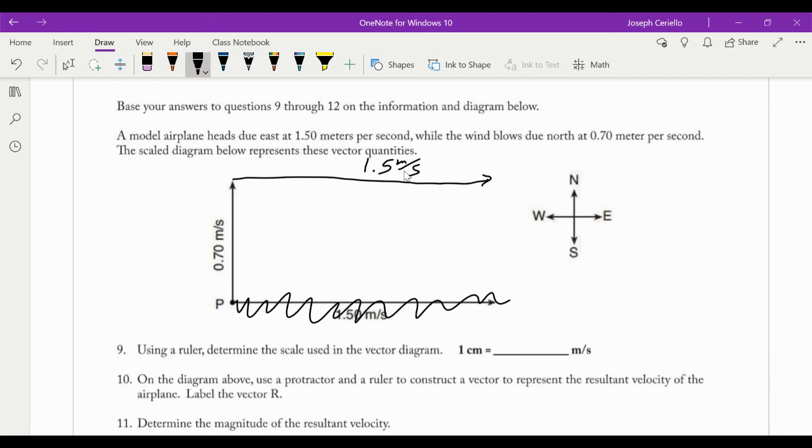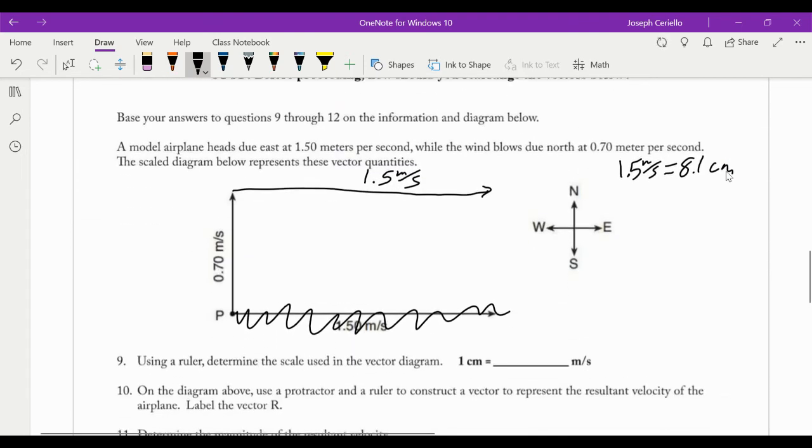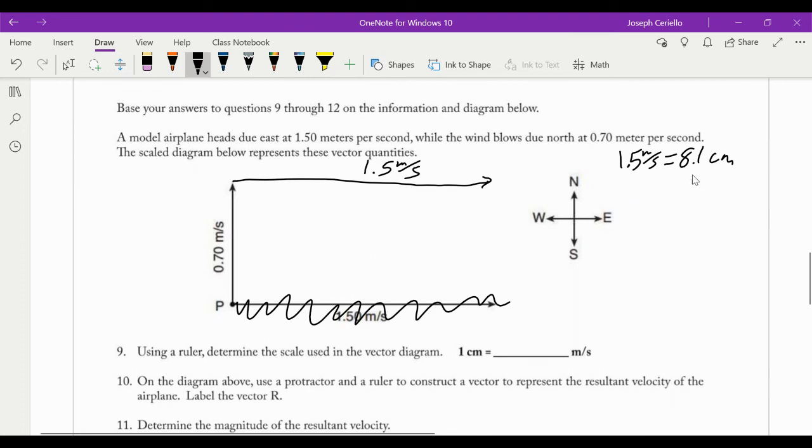Now, how long was that 1.5 meter per second vector? I think it was about 8.1 centimeters. I think that's what some people were getting. If it's wrong, it's all right. I mean, it's the same method to do this question. So we have 1.5 meters per second equals 8.1 centimeters. Now, I always want to get the one in front of the centimeters. So I'm going to divide by 8.1. 1.5 divided by 8.1. I'm going to round this number a little bit. We're going to get 0.185 meters per second equals one centimeter.